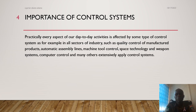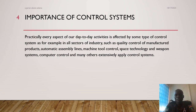Importance of control systems: practically every aspect of our day-to-day activities is affected by some type of control system. For example, in all sectors of industry such as quality control of manufactured products, automatic assembly lines, machine tools control, space technology, and weapon systems — all find extensive applications of control systems.